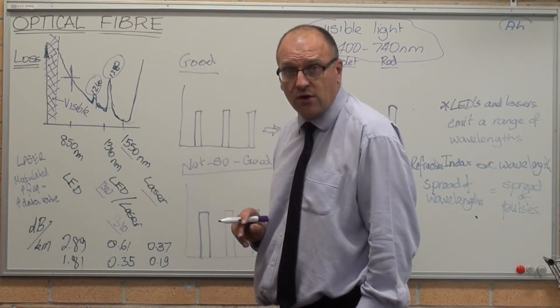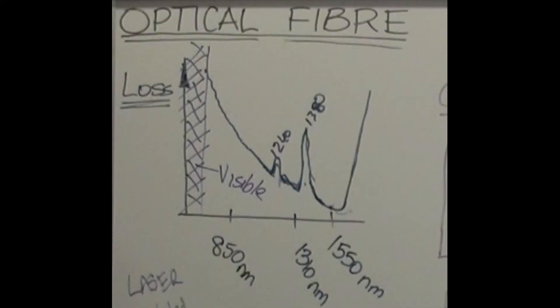On the other side of this graph, starting around 1600 nanometers, you notice a rapid rise in absorption with wavelength. This is due to the physics of silica and its interaction with light at this frequency.